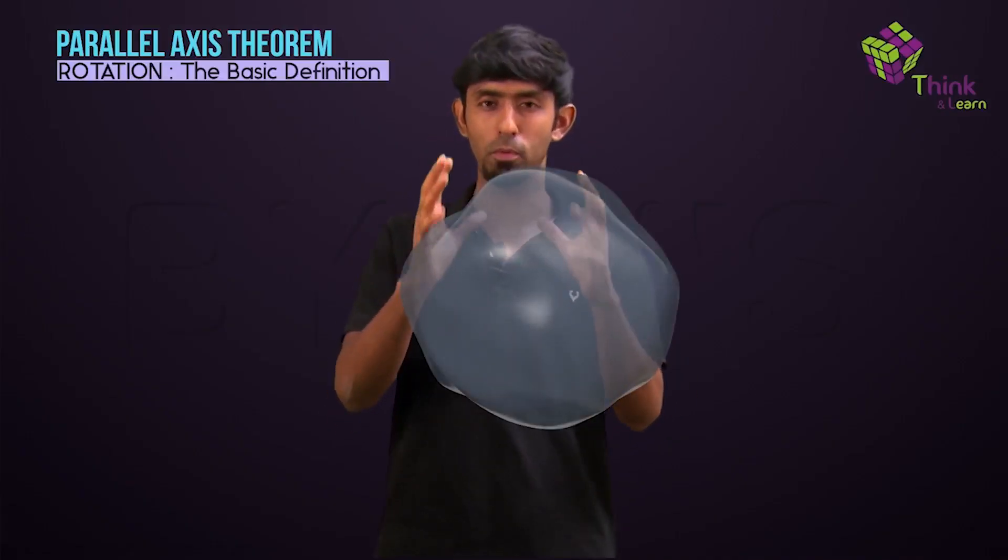Let's imagine a rigid, solid body of random shape like this. Then if I know its moment of inertia about an axis passing through its center of mass...